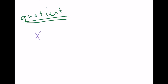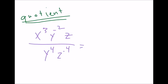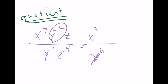Let's say we have a complicated example: x to the 3rd, y to the negative 2, z — all over y to the 4th, z to the negative 4. First, move the negative exponents to where they belong. x cubed stays on top; y to the negative 2 moves to the bottom, combining with y to the 4th to give y to the 6th on the bottom. The z to the negative 4 moves to the top, combining with z to give z to the 5th on top. That's your answer: x cubed times z to the 5th over y to the 6th.